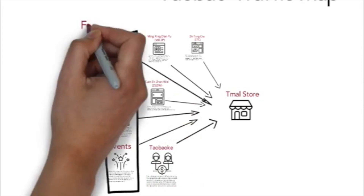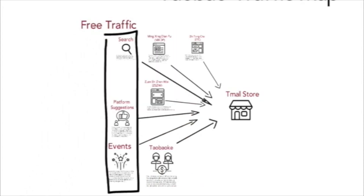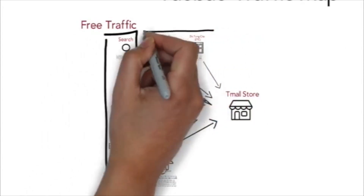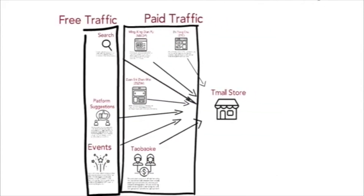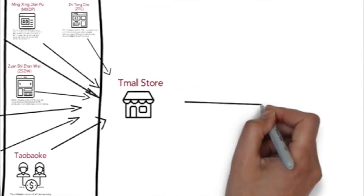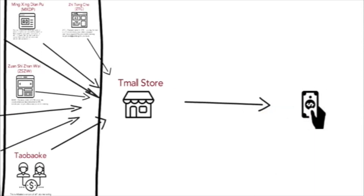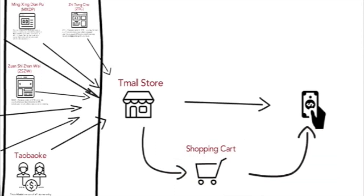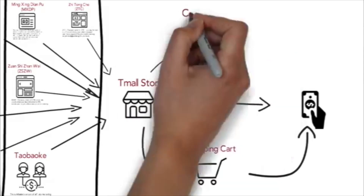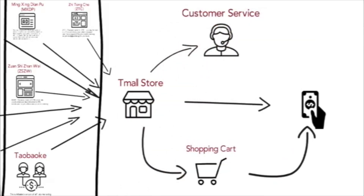Search, platform suggestions, and most events are all free traffic. ZTC, ZSCW, MXDP, and Taobao Ke are all paid traffic. They all help you get customers into the store. Some people go straight to payment, but most will not be so quick to buy. A lot of people will leave items in their shopping cart for days — Taobao even classifies the shopping cart itself as a source of traffic. A significant number of them will talk to customer service before even putting anything in their cart.